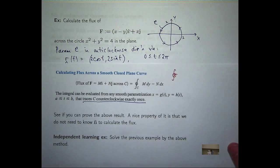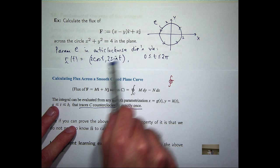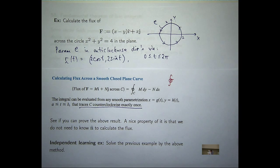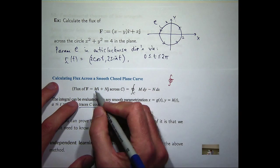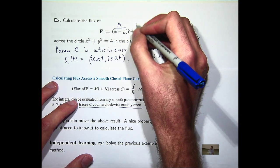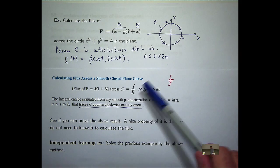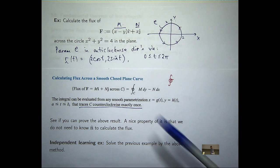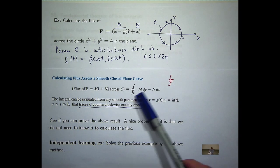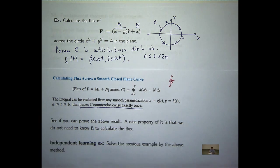Well, essentially here, our parameterization component functions are just 2 cosine t, 2 sine t. So in the setting of this result up here, m is going to be this function here, n is going to be this x function here. So what we want to do is just calculate these differentials and evaluate m and n along the curve and then just do this integration.